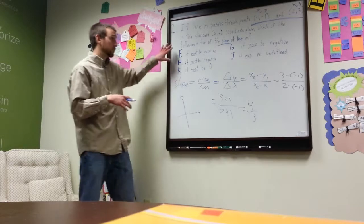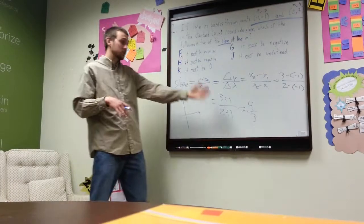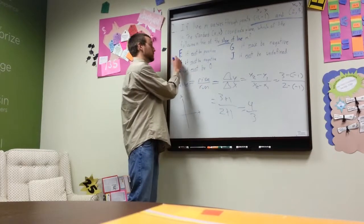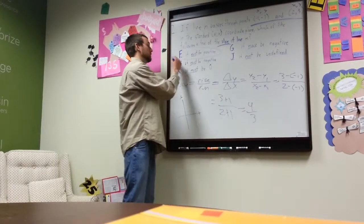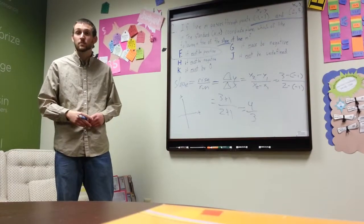And then we look at the answers. f is the only one which asks for a positive slope. Our slope is positive. So we know right away it's going to be f. And that's the answer for the problem. Any questions? No. All right. Great.